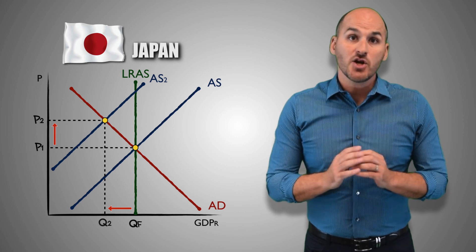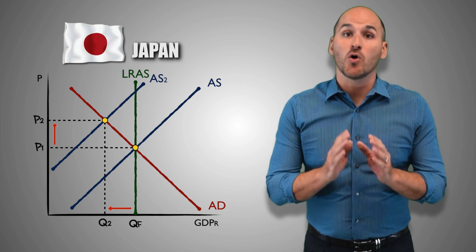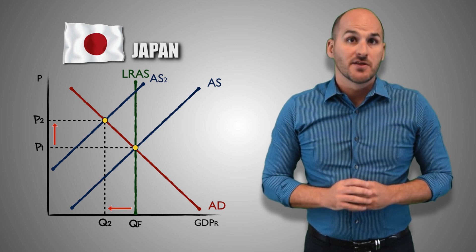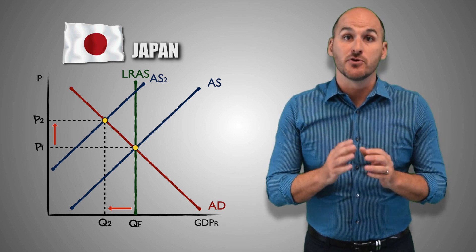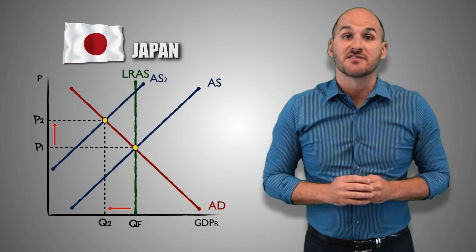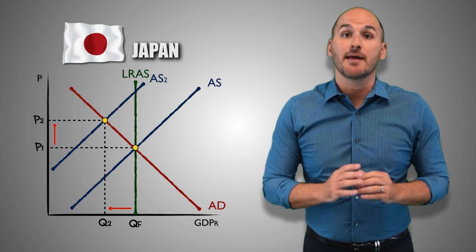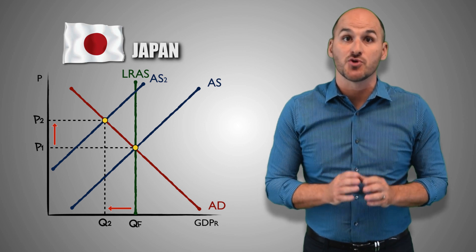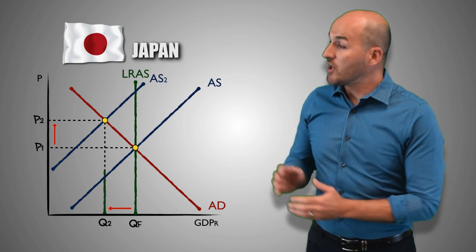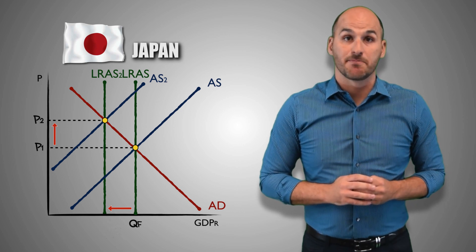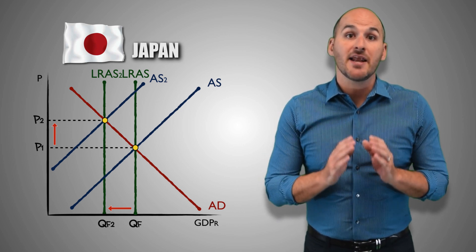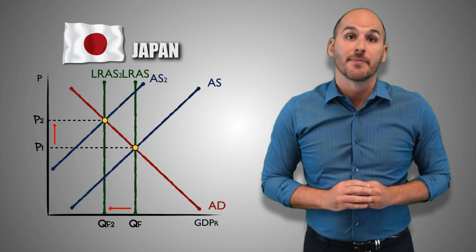The increase in taxation on an input will also affect aggregate supply in the long run. After this fundamental change, the capacity of the Japanese economy to produce real GDP output decreases. As long as the excise tax is in place, Japanese firms will struggle to produce the same quantity of real GDP output they used to at full employment. The 5% tax on plastic will cause a decrease in long-run aggregate supply and decrease the production possibilities of the Japanese economy. Japan has experienced long-run economic contraction.